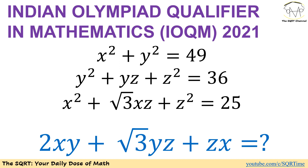The three expressions we have are: x² + y² = 49, y² + z² + yz = 36, and x² + z² + √3·xz = 25.